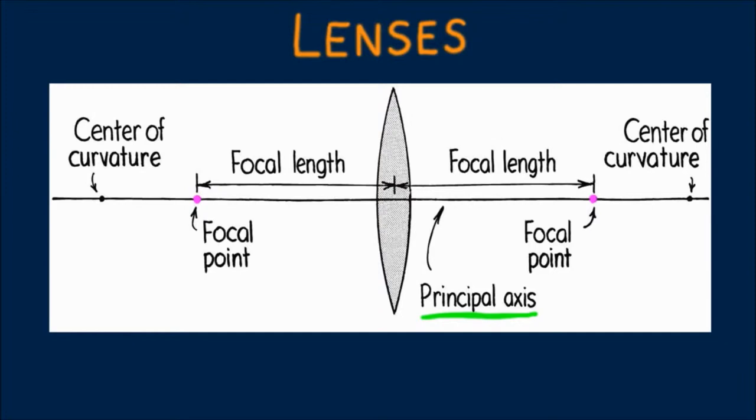All such possible points make up a focal plane, not shown here. Because a lens has two surfaces, it has two focal points and two focal planes. The focal length of the lens is the distance between the center of the lens and either focal point.